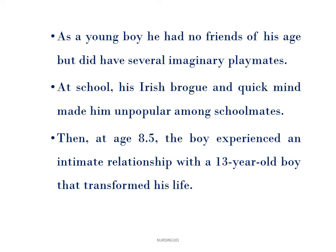Since Sullivan was an only child, as a young boy he did not have any friends of his age, but he did have a lot of imaginary playmates. At school, he was bullied and made fun of because of his Irish origin and also because he was quick-minded, making him really unpopular among schoolmates. This led to him being an isolated child. At the age of eight and a half, he experienced an intimate relationship with a 13-year-old boy, and this relationship transformed his life and played an important role in the theory he developed.